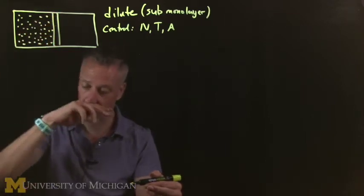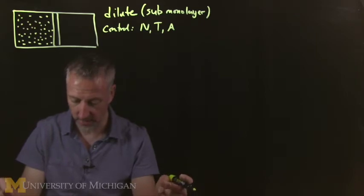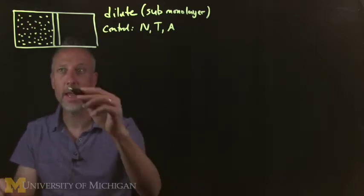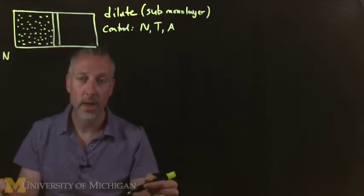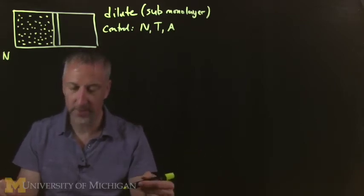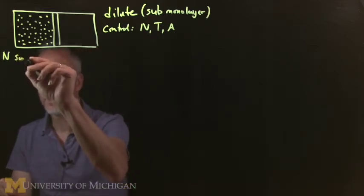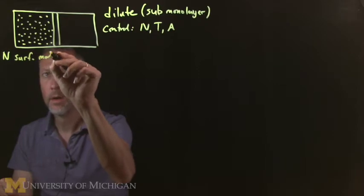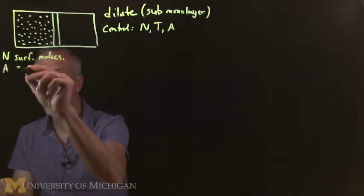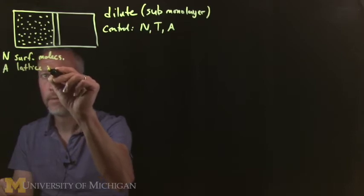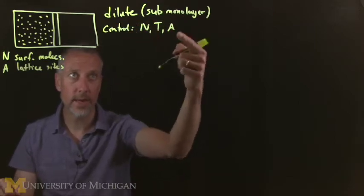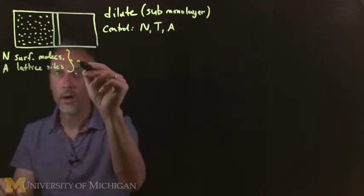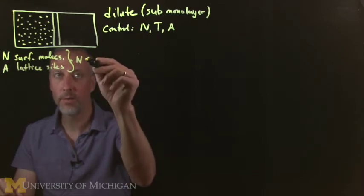From the force, we can figure out what the pressure is because we know the area, or if it's one-dimensional, we know the length. We're going to have N surfactant molecules and we're going to do a lattice model just like we've done before. To keep it consistent with the notation in the book, there will be N surfactant molecules and A lattice sites. Because we have this sub-monolayer condition, one of our criteria is that N, the number of molecules, is much, much less than A.